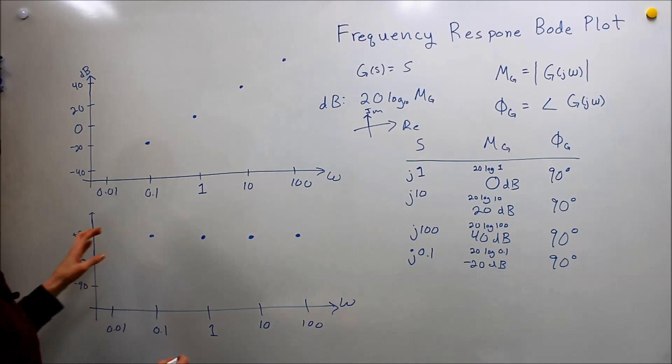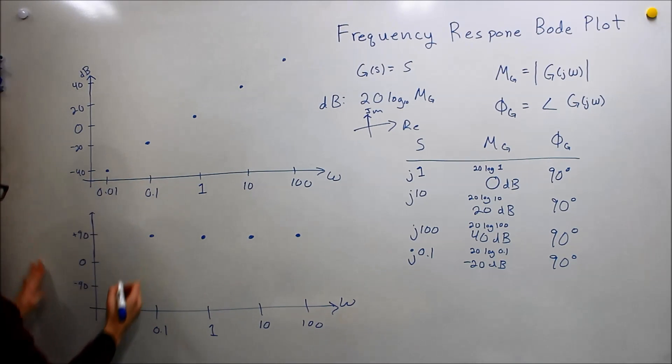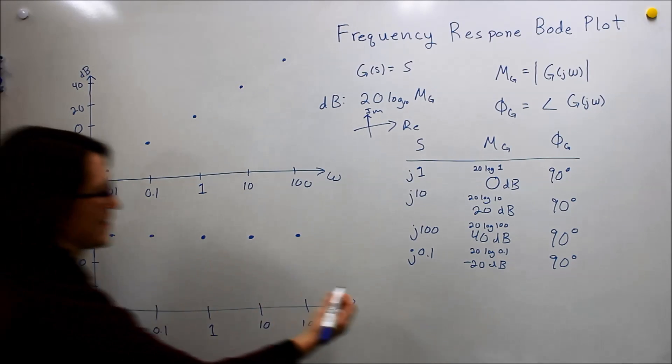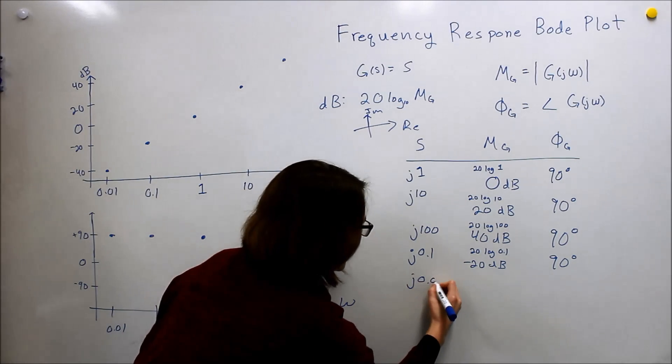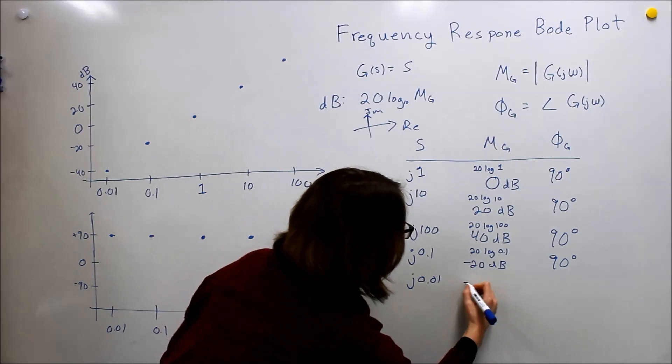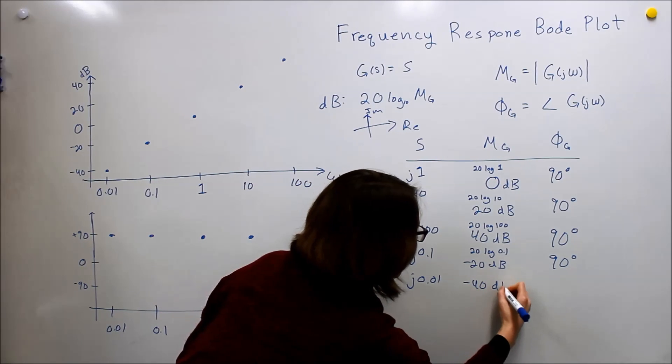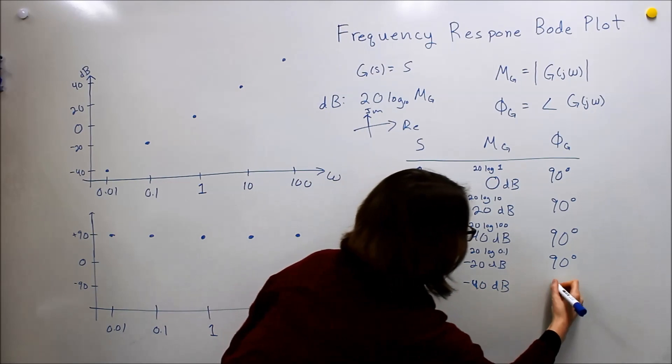I'll give you a hint on the last one - it's going to be negative 40 and positive 90. If you go through yourself, you can see that if you put this point in, you'll get negative 40 dB and 90 degrees.